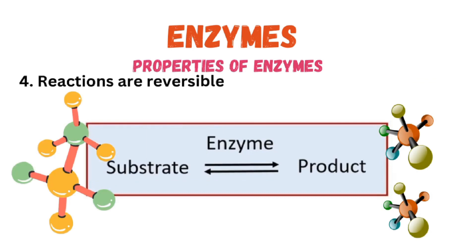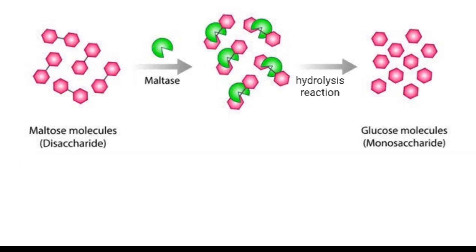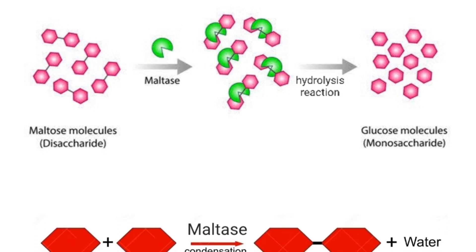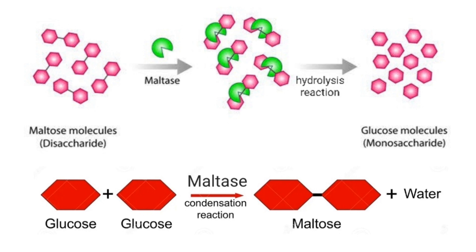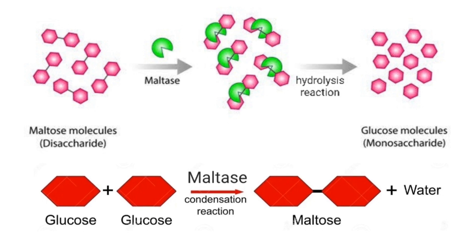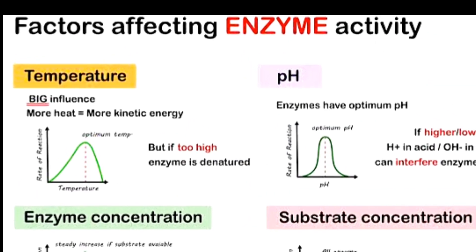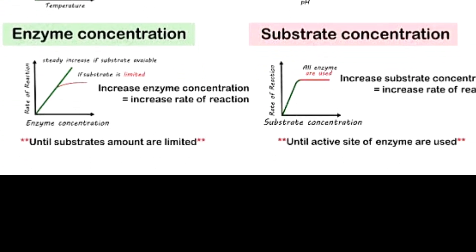The last property: reactions catalyzed by enzymes are reversible. This means enzyme-catalyzed reactions can proceed in either direction. For example, enzyme maltase can catalyze the breakdown of maltose to form glucose molecules, but it can also assist in joining glucose molecules to form maltose. Therefore, enzyme-catalyzed reactions are reversible. This brings us to the end of this lesson; our next lesson will discuss factors affecting the rate of enzyme reactions.